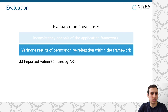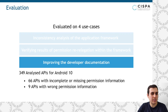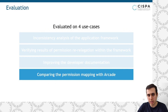In the second use case, we revisited the results of ARF, which is a tool for detecting permission redelegation vulnerabilities in the system services. Out of 33 vulnerabilities analyzed by Dynamo, we found five vulnerabilities that are false positives. In the third use case, we analyzed about 350 APIs from the developer's documentation of Android 10 and found 66 APIs with incomplete or missing permission annotations, in addition to nine APIs with wrong permission information, which was quite surprising to us.